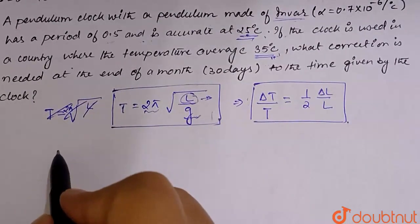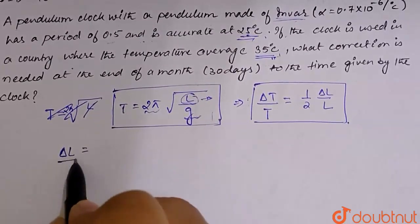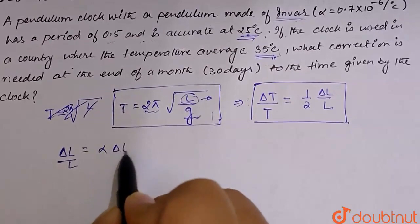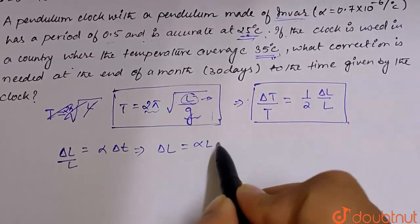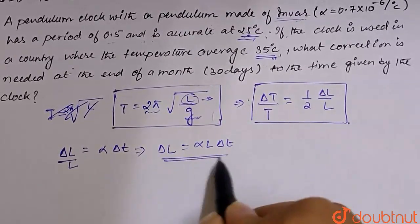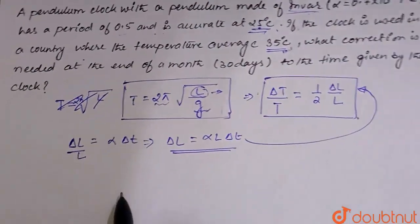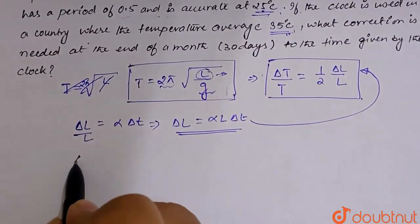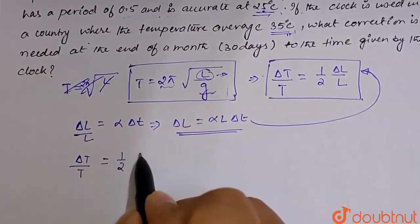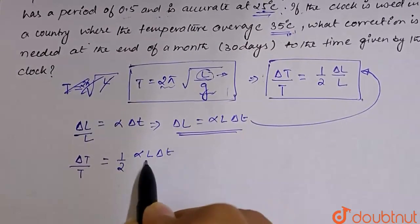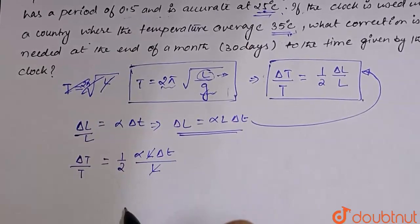The temperature increases, so the pendulum length will change. Delta L by L is equal to alpha times delta T. So delta L is alpha L into delta T. Delta T divided by T is equal to half alpha L delta T divided by L. This length will be cancelled out.